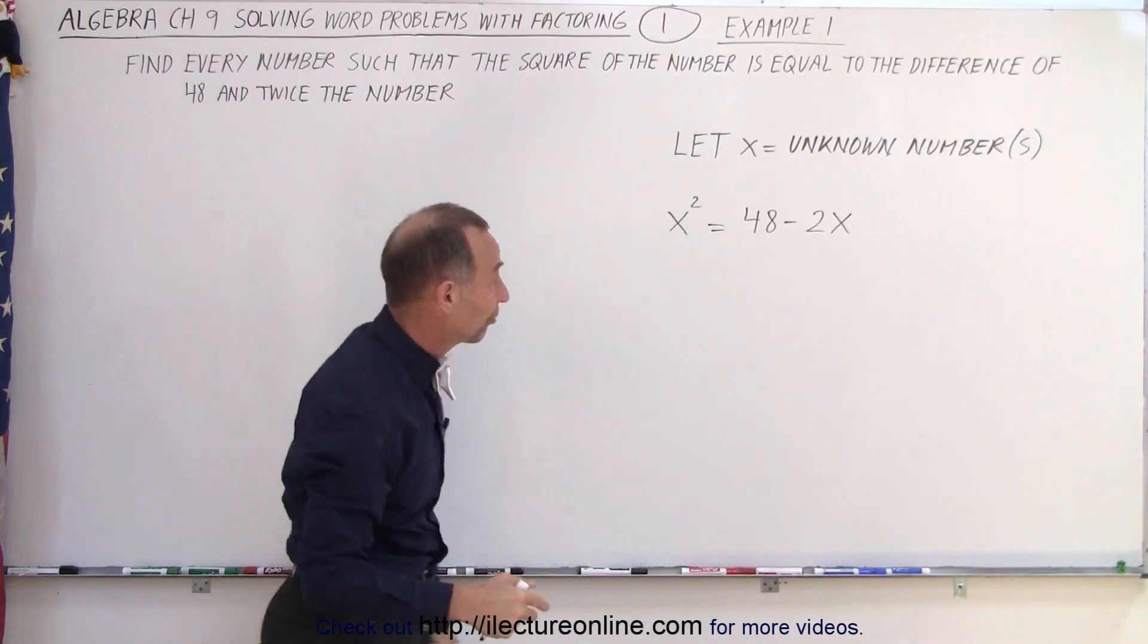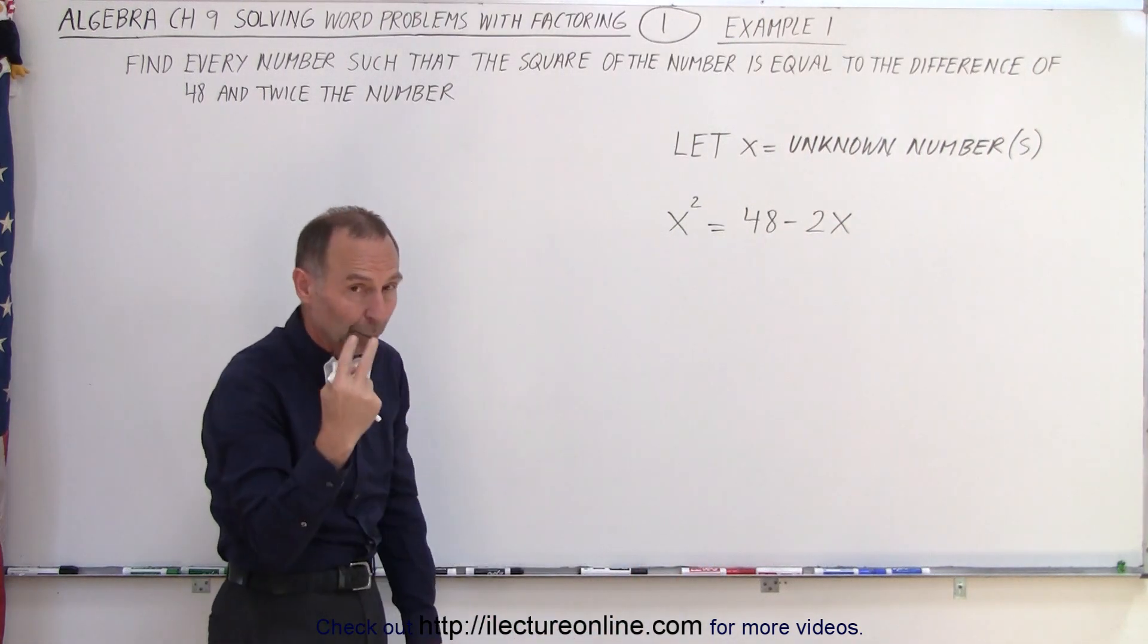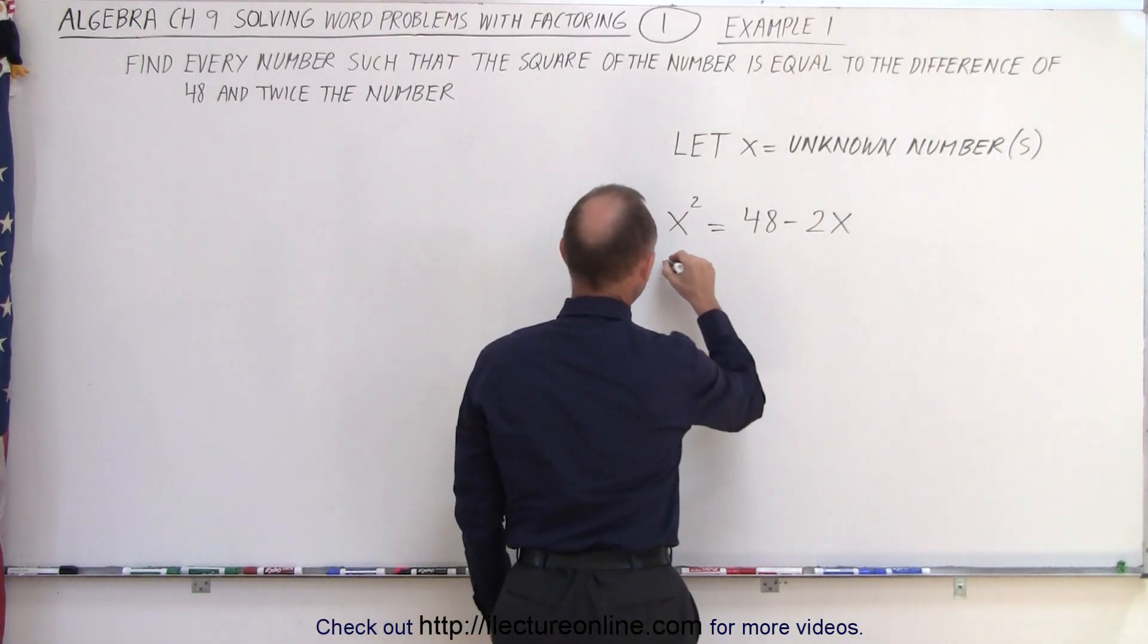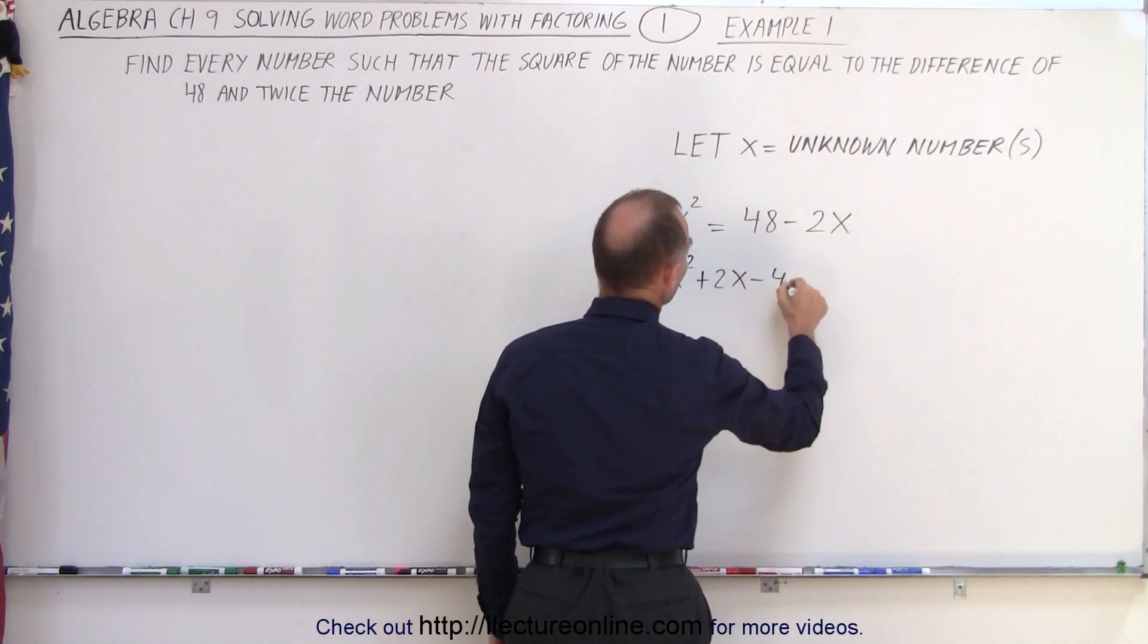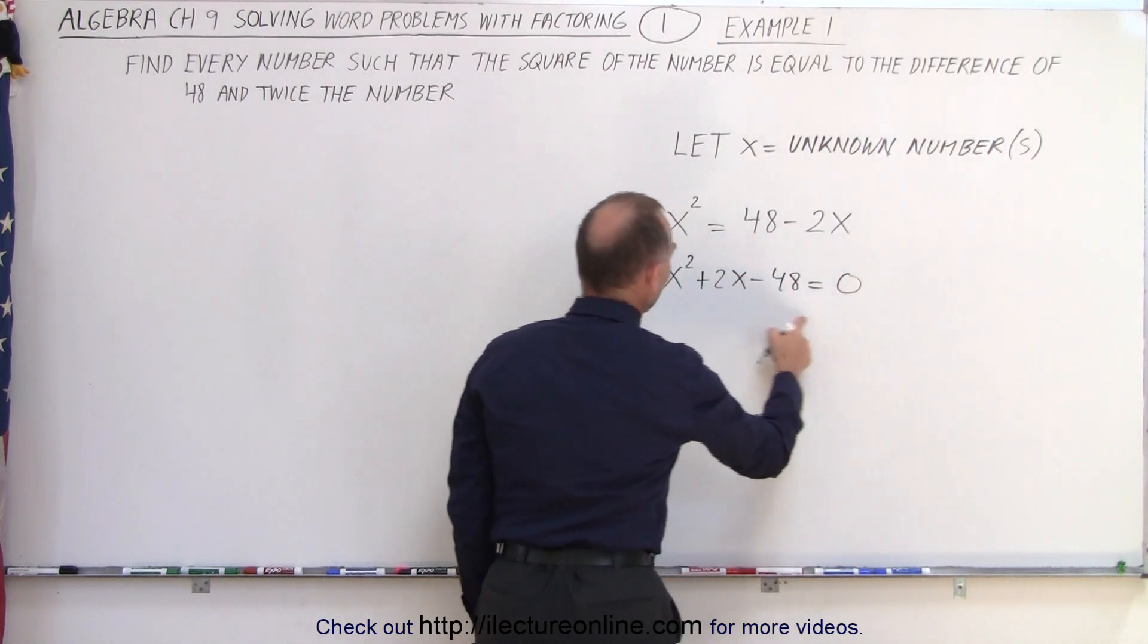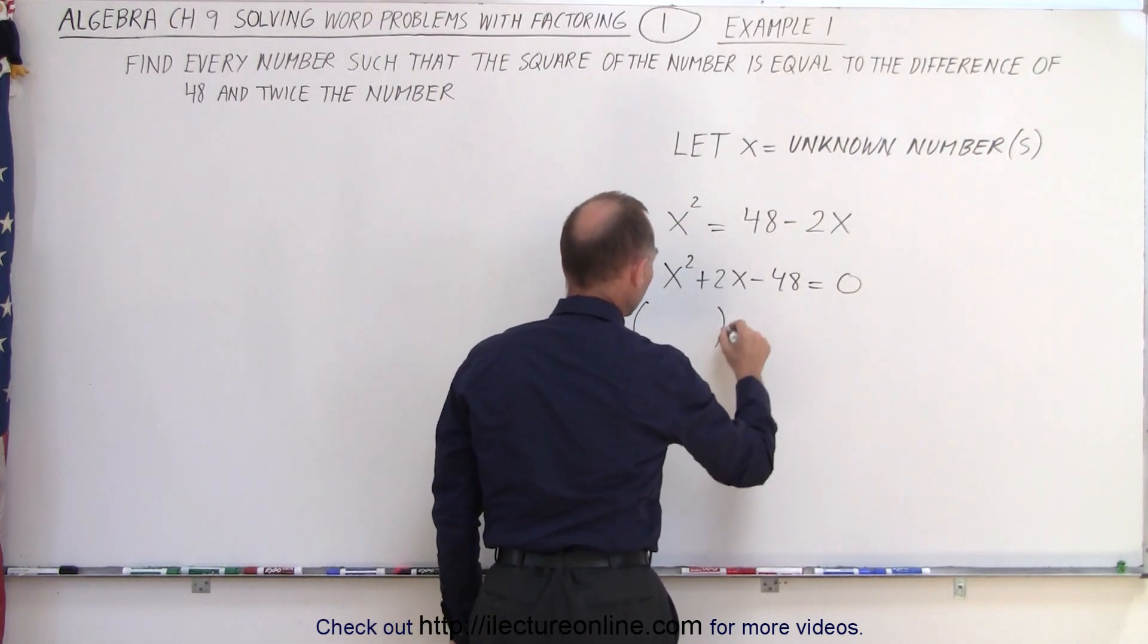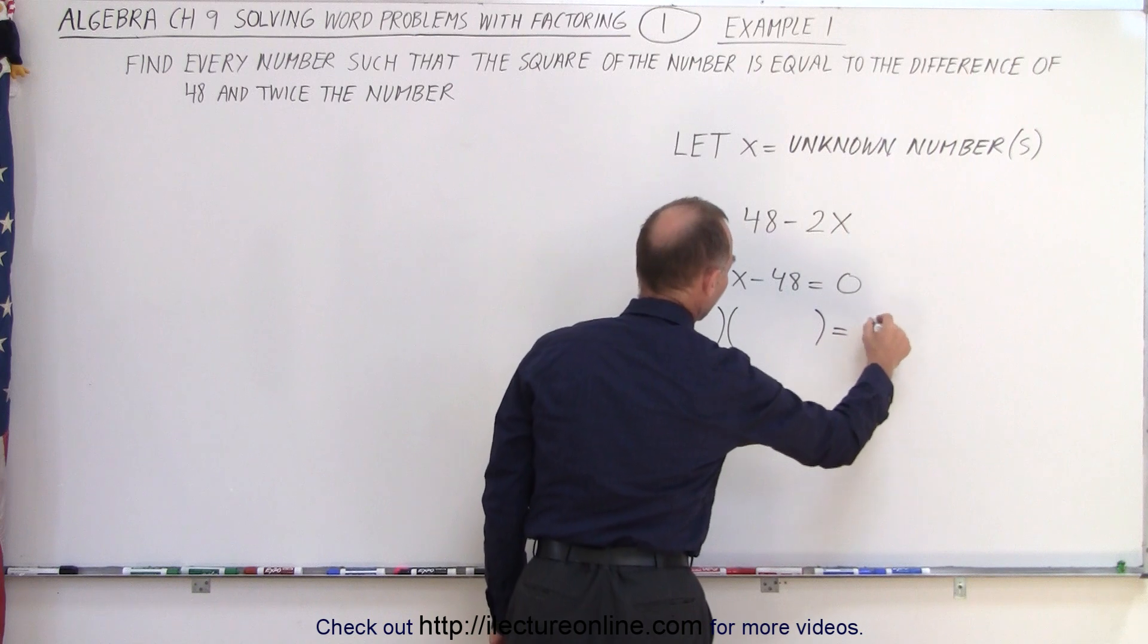Now we have to solve that for x, and since it's a quadratic equation, we probably will find two solutions. Let's put everything over on one side. We get x squared plus 2x minus 48 equal to 0. And notice, we can probably factor that.